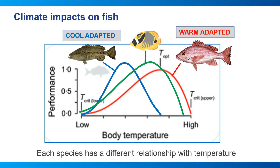Different fish species have different temperature preferences. There are cool-adapted species with lower optimal temperatures and more warm-adapted species with higher optimal temperatures. Some species, like the yellow butterfly fish represented by the green curve, can perform well at a broad range of temperatures — they have a wider thermal envelope — whereas the grouper, represented by the blue curve, has a much narrower thermal envelope. Generally, we expect more warm-adapted fishes with broader thermal tolerances to increase in abundance as oceans warm, whereas cool-adapted and narrow-niche species may not fare as well.